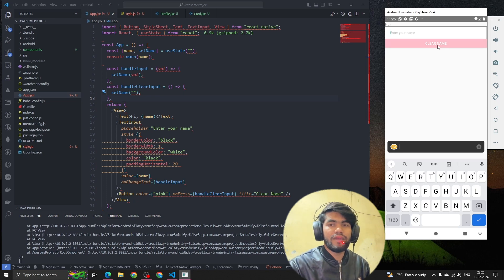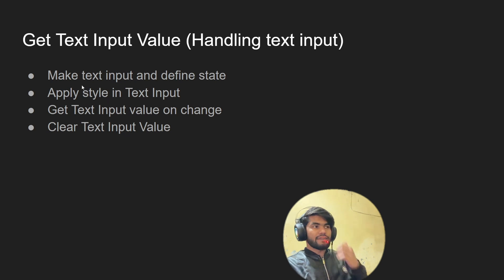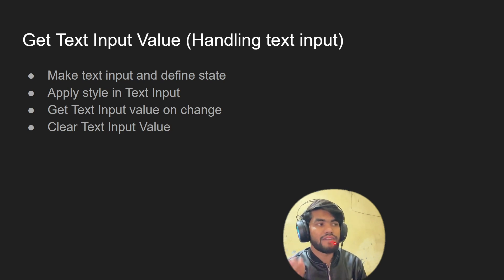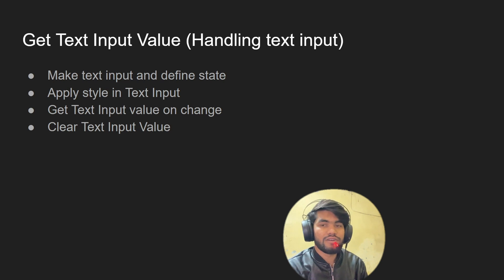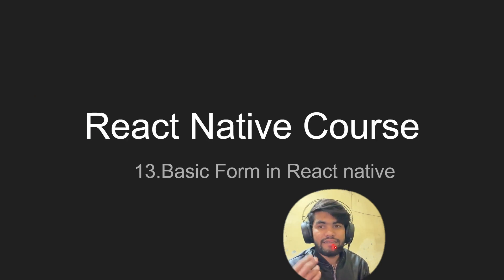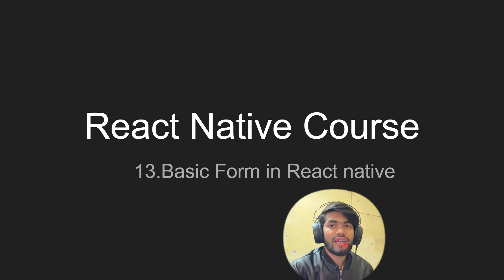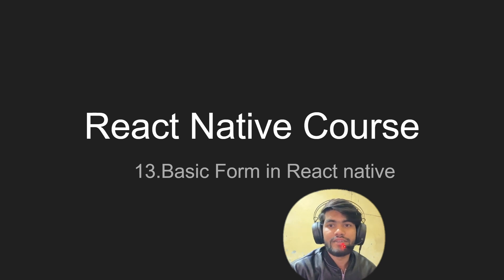So this is all about text input in React Native. We've seen how to create a text input field, define state, apply styling, get the text input value using onChangeText, and how to clear the input value. In the next session, we're going to build a basic form in React Native where we can toggle password visibility. Please let me know if you have any questions, and let's meet in the next session. Thank you, bye.